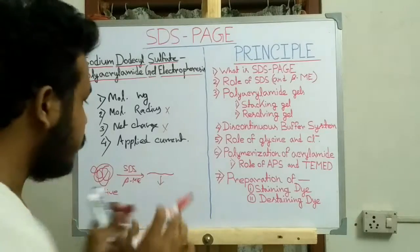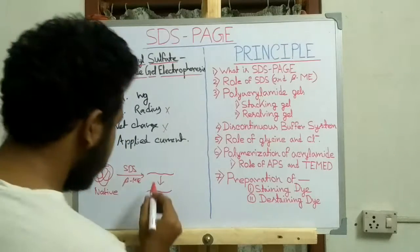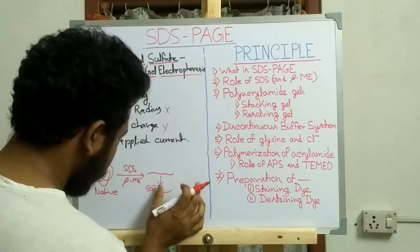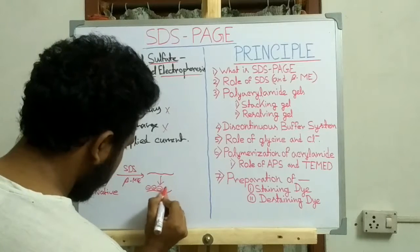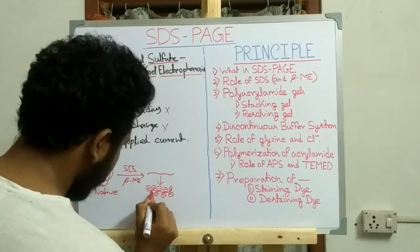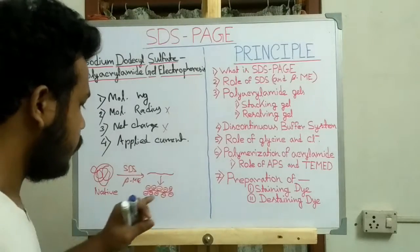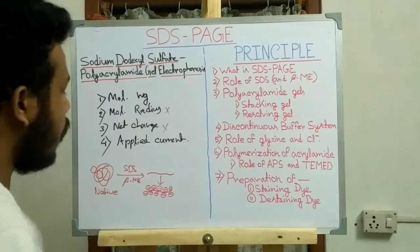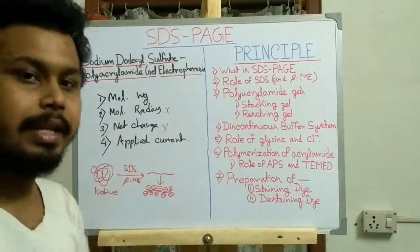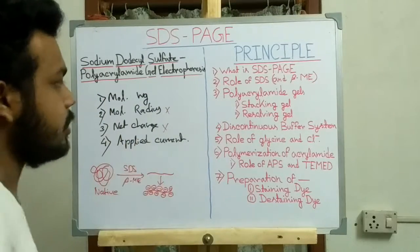SDS has another function: it can coat the entire protein, making it negatively charged, because SDS itself is negatively charged. So now the net charge of all proteins in the polyacrylamide gel is negative. These two factors — molecular radius and net charge — are nullified, and this is the whole function of SDS.